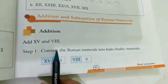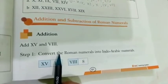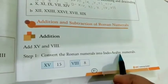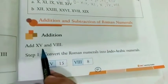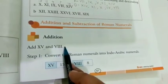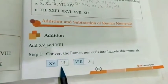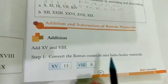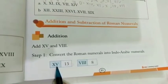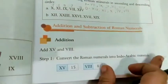There are some steps to convert the Roman numbers. Convert the Roman numeral into Indo-Arabic numerals. First, the question is add 15 and 8. So what you have to do? First you have to convert these Roman numerals into Indo-Arabic numerals, as just written here: 10, 5 that is 15, and V, 1, 1, 1 that is 8.